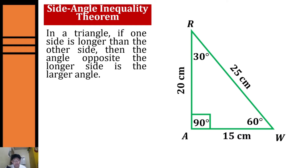Based on our example, our longest side is RW with a measurement of 25 centimeters, so the angle opposite our longer side is the larger angle. In this case, 90 degrees is our larger angle.